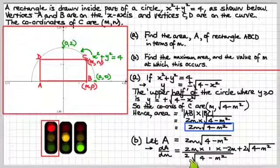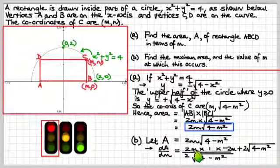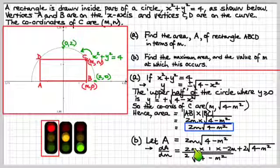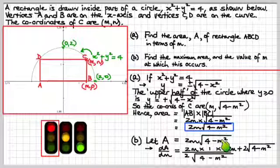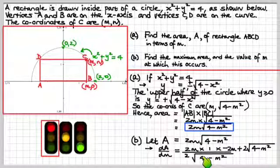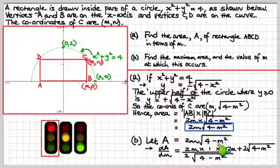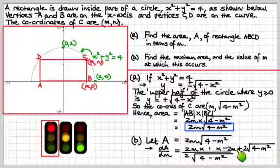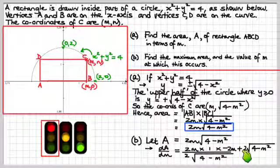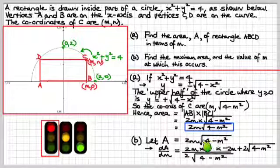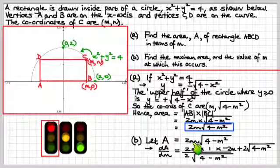It's going to be 2 times left d right, which is the left term times the derivative of the right. That's the square root of something, something to the half. So it's going to be a half of the something to the minus a half times the derivative of the thing itself, which is minus 2m. That's the left d right bit. Now here comes the right d left. Plus 2 times the right term, which is this square root term, times the derivative of the left term, which is the derivative of m, which is 1.